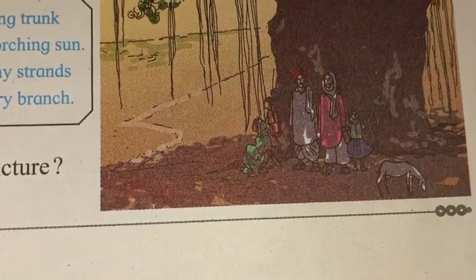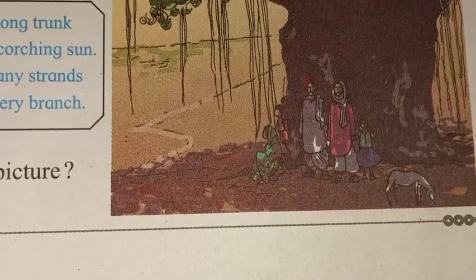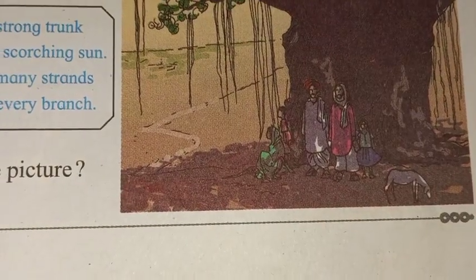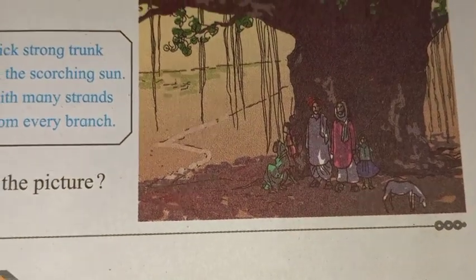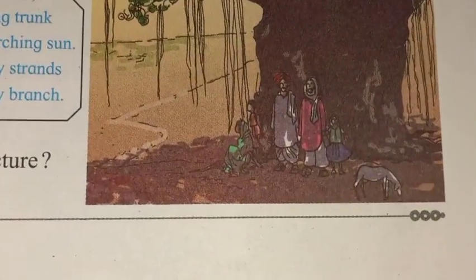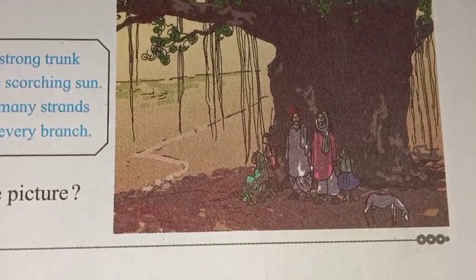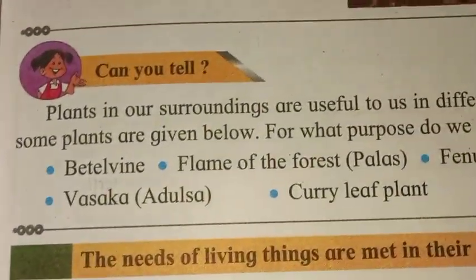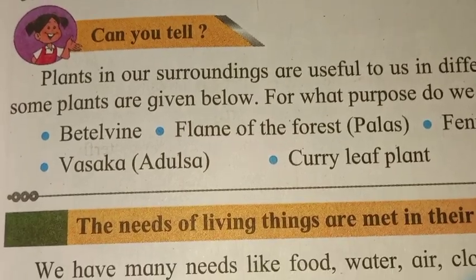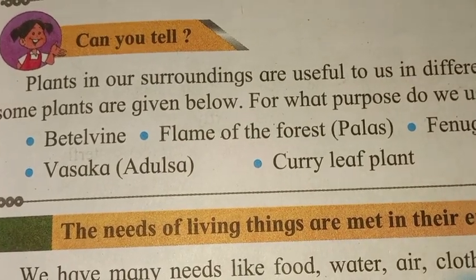This tree is a tree which gives shade from the sun — so hum log, even as human beings, do say living things ka help player hai. This is the interrelationship. Okay, now can you tell: plants in our surrounding are useful to us in different ways?